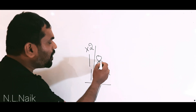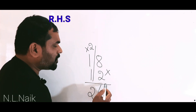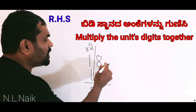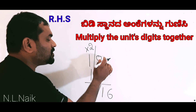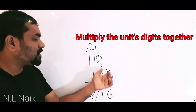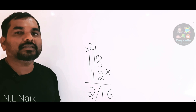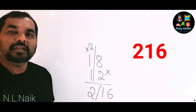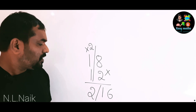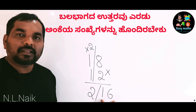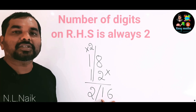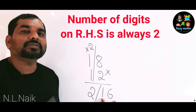Now for the RHS answer, multiply the units digits together. So the final answer is 216. In such multiplication, the number of digits on the RHS is always 2.